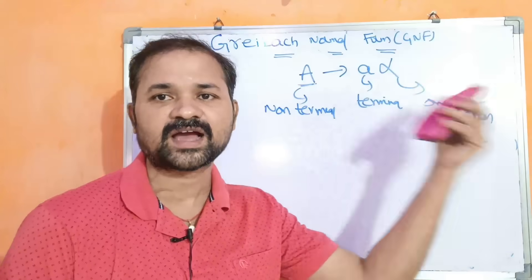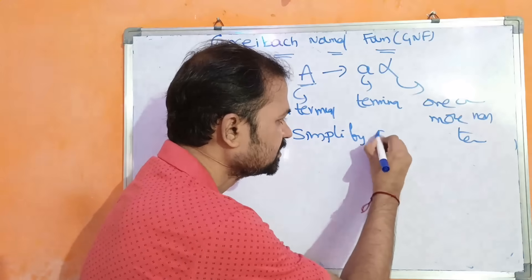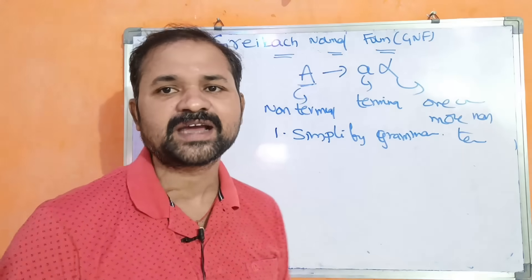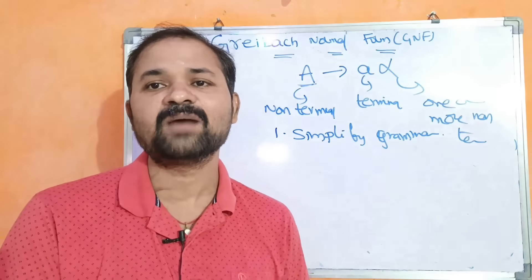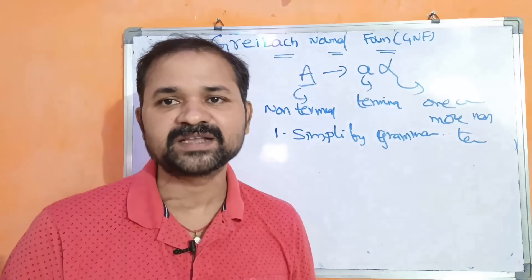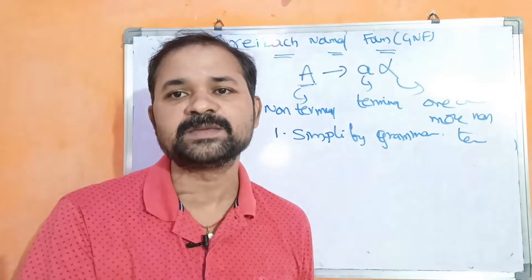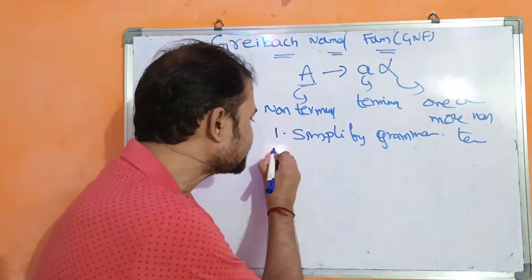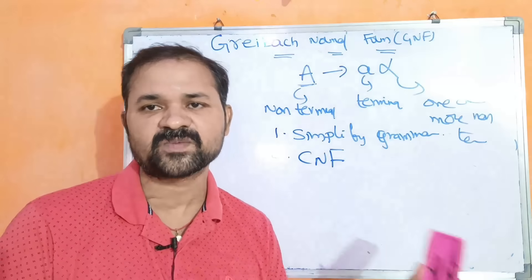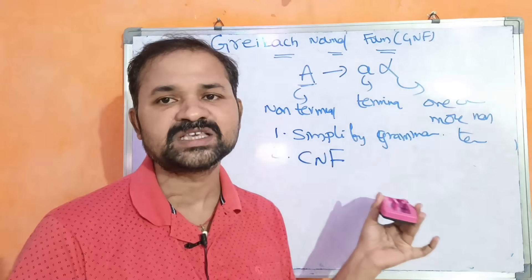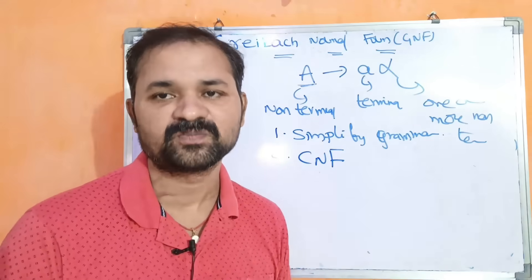Let us see how we can convert a context-free grammar into GNF. The first step is to simplify the grammar — that means if the grammar contains useless symbols, epsilon productions, or unit productions, we have to eliminate them. The second step is to check whether the grammar is in Chomsky Normal Form (CNF). If not, we need to convert it into CNF first.